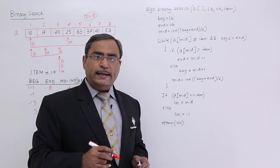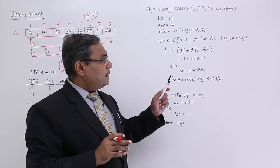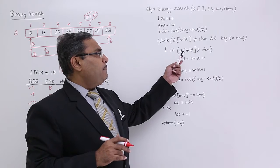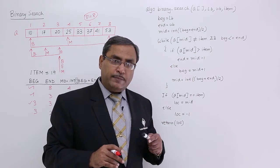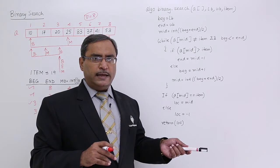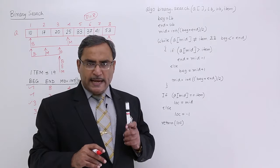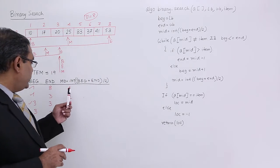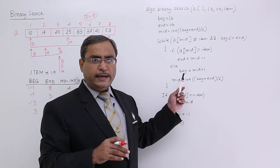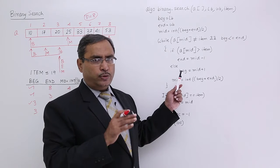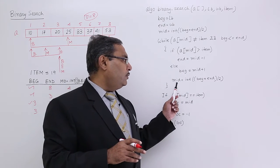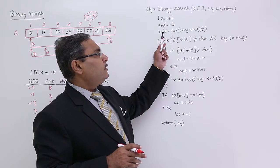While A[mid] is not equal to item — until I get the item at the mid place — and beg is less than or equal to end, meaning beg has not crossed end: if A[mid] is greater than item, since all data are pre-sorted in ascending order, then end has to be updated with mid minus 1, as we demonstrated. Otherwise, I might be finding this item in the second sub-list, so beg will be updated by mid plus 1. Either end or beg gets updated, so I need to recalculate mid within the while loop body.